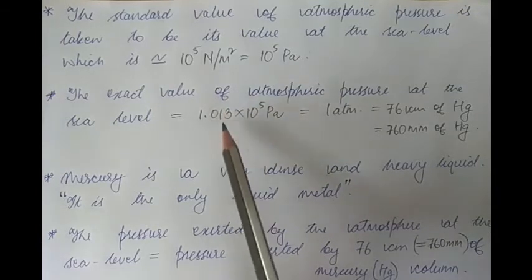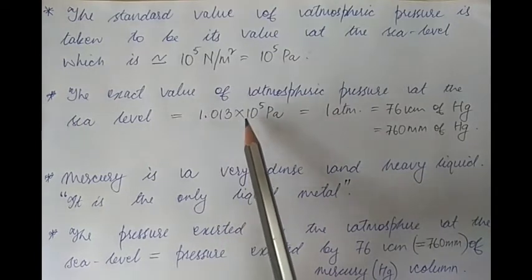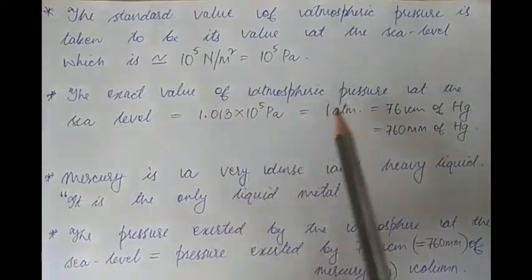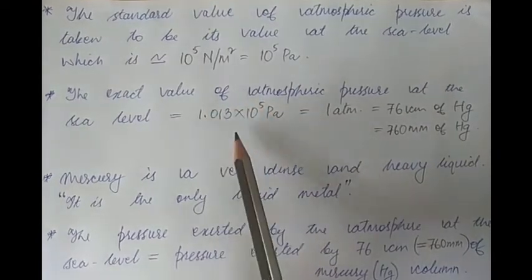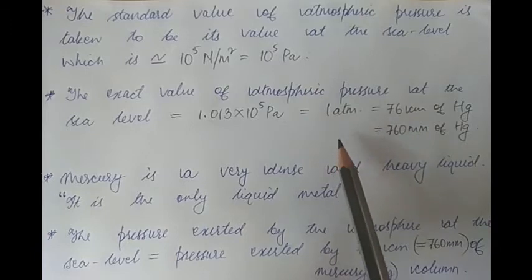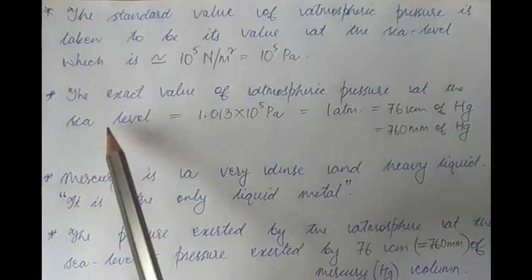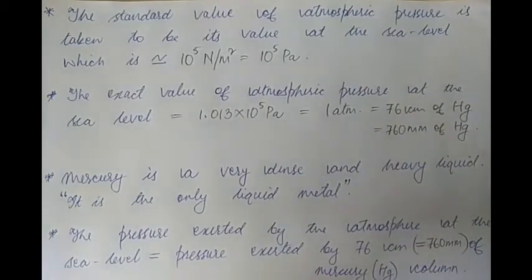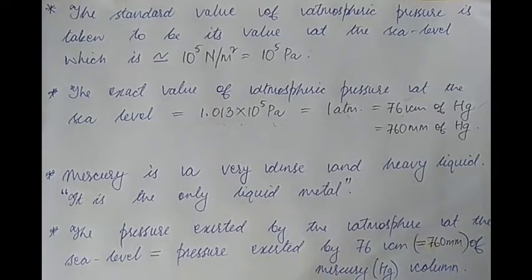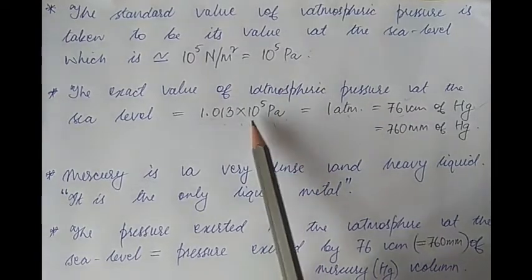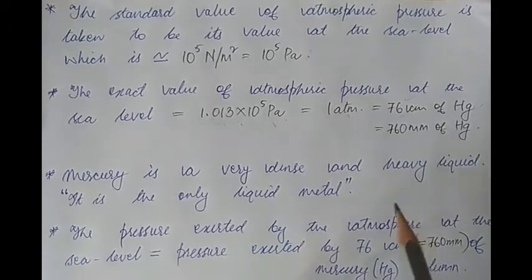In the approximate value we neglected 0.013, which is a small number. So 1.013 × 10^5 pascals is the exact value of atmospheric pressure at sea level. This value is also called 1 atmosphere or 1 atm — it is the pressure exerted by the atmosphere at sea level. This value of atmospheric pressure equals the pressure exerted by 76 centimeters of mercury.